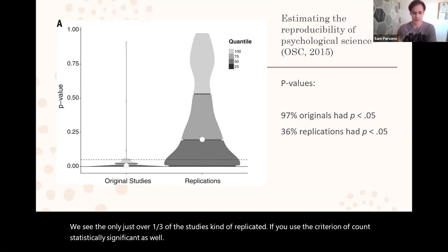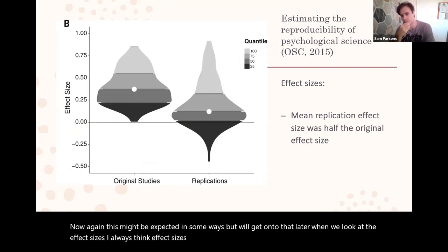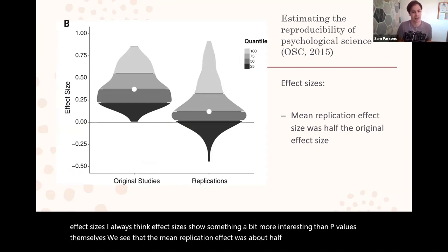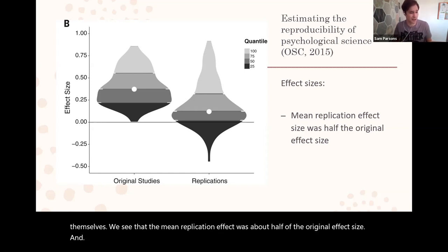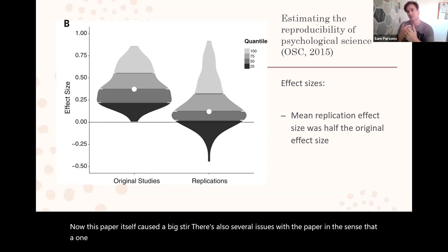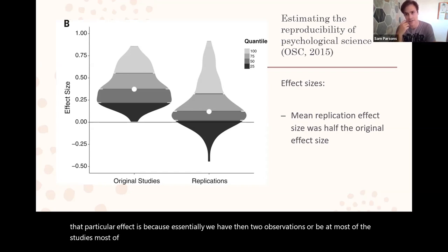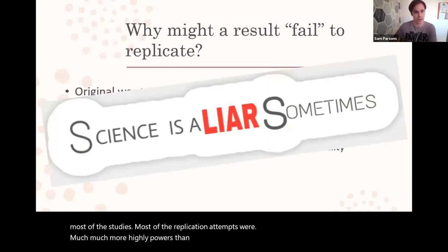We see that only just over a third of the studies replicated if you use the criterion of statistically significant. This might be expected in some ways but we'll get onto that later. When we look at the effect sizes, I always think effect sizes show something a bit more interesting than p-values themselves. We see that the mean replication effect was about half of the original effect size and hopefully surprisingly about a quarter of the effects were actually in the opposite direction to the original. This paper itself caused a big stir.